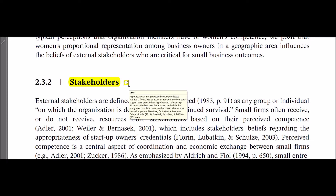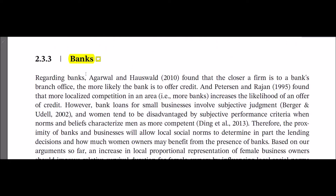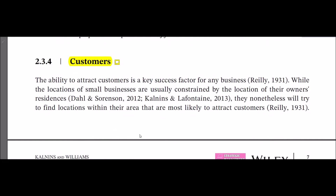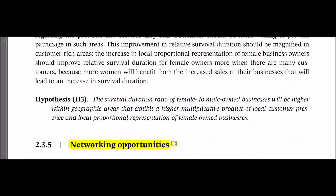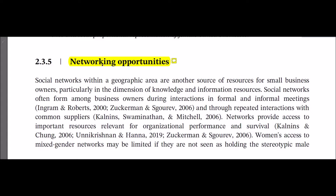The authors missed important literature — for instance, Belden Cabrera-Bores 2018, Soliswick et al. 2019, etc. In the Banks section, the authors completely failed to provide a latest picture of the research and theoretical support; nothing was cited from 2015 to 2019. In section 2.3.4 on Customers, literature depicting the latest situation on the topic was not cited at all — citations from 2015 to 2019 are totally missing. In section 2.3.5 on Networking Opportunities, the hypothesized relationship was not developed by citing related literature and providing theoretical support; only three articles were cited from the last five years, and those were not relevant to the hypothesized relationship.